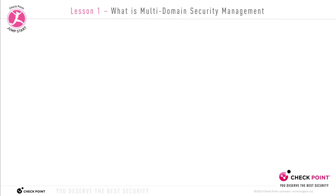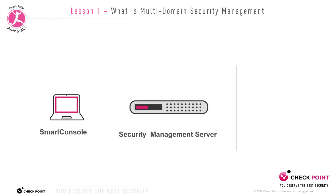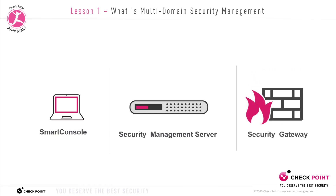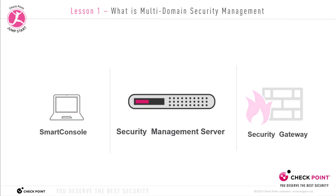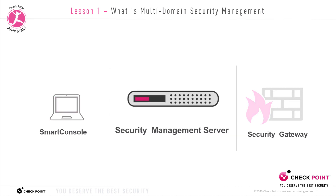In previous Jumpstart training courses we mentioned that Checkpoint architecture can be broken down into three main components. First, we have the Smart Console, which is the GUI client component. Second, we have the Security Management Server, which contains the database and the security policies. And third, we have the Security Gateway, which does policy enforcement. In this training we're going to replace the Security Management Server with the Multi-Domain Security Management Server.